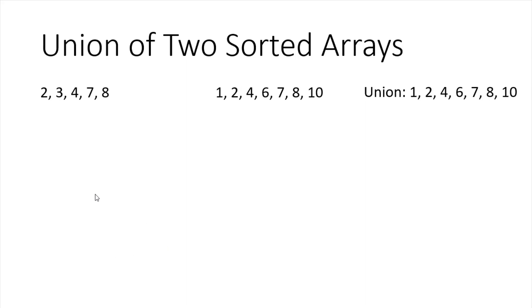So if you see, both arrays share common elements like 2, 4, 7, and 8. When we merge them, these will appear as duplicates. We need to not consider duplicate cases — we only consider each element once. After merging there should not be any duplicates, and that is what we call a union.